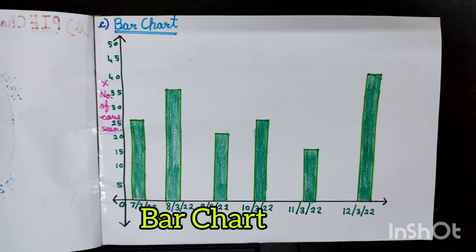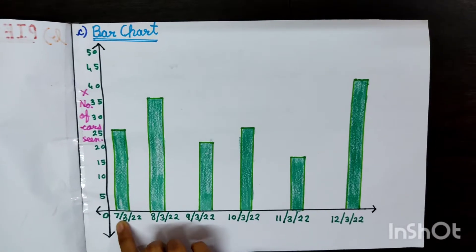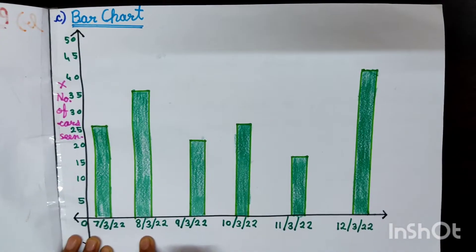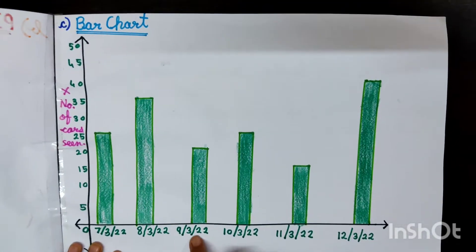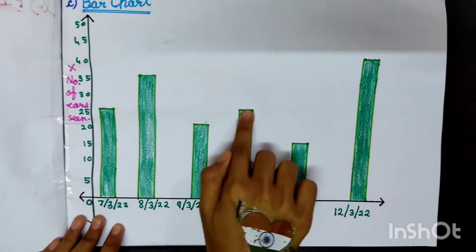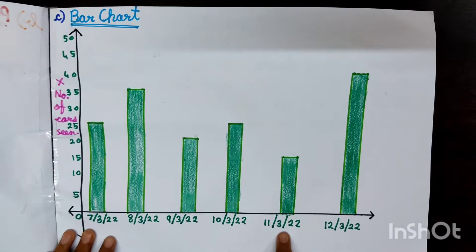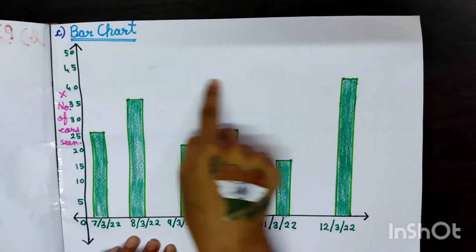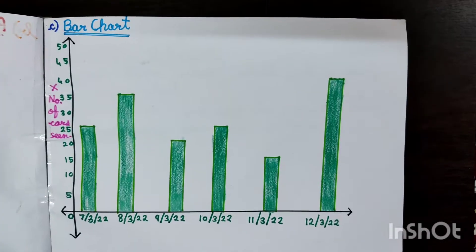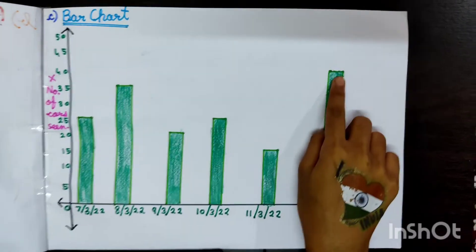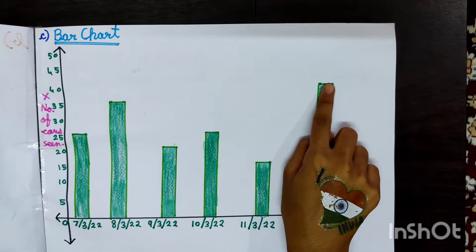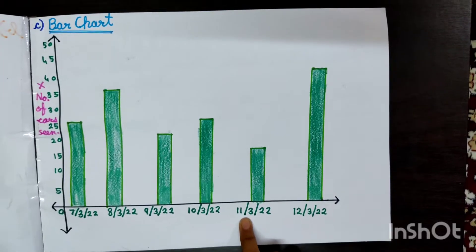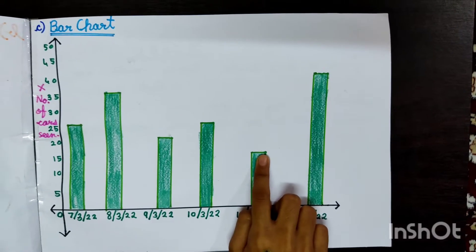And the last chart is the bar graph. Look at the bar graph. The 12 March 2022 has the largest bar because it is the largest one. The 11 March 2022 is the least because it carries 15 cars.